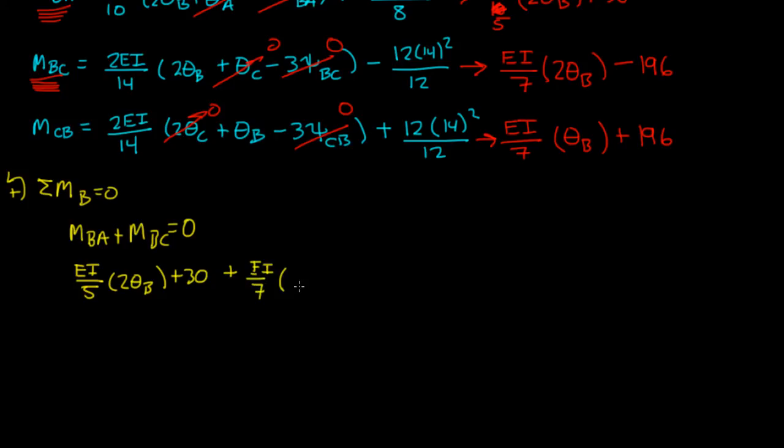EI over 7 times 2 theta B minus 196. Let me just make sure that's right. Yeah, that's right.